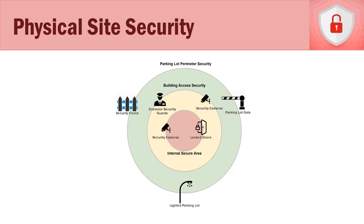We'll talk about why those aren't purely preventative and how they roll into other categories. The second type is detective — these send off alerts either during or after an attack. We don't have much here that sends an alert, except if security guards have walkie-talkies or radios.